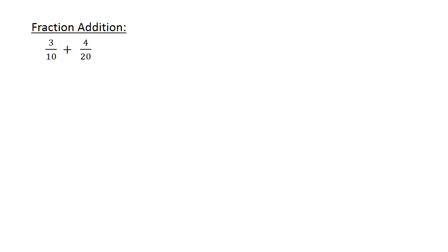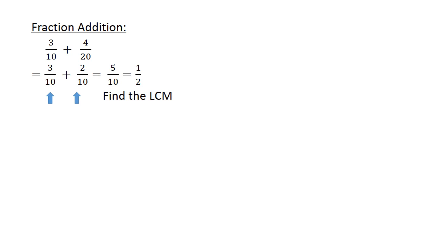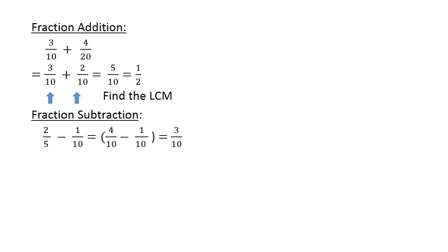Fraction addition: 3 over 10 plus 4 over 20. Find the lowest common multiple. 3 over 10 plus 2 over 10 equals 5 over 10, which equals 1 over 2. Fraction subtraction: 4 over 10 minus 1 over 10 equals 3 over 10.